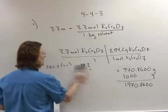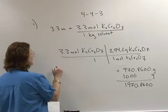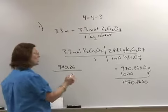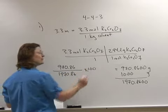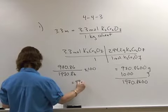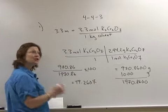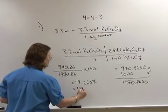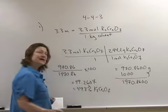In order to get the weight percent, the mass of the component that I'm looking for, which is the solute, is 970.86 divided by the total mass which is 1,970.86 times 100 to get my percentage. When I do the math here I get 49.2607, and percents we always take to the tens place just the same way that we handle atomic mass units.